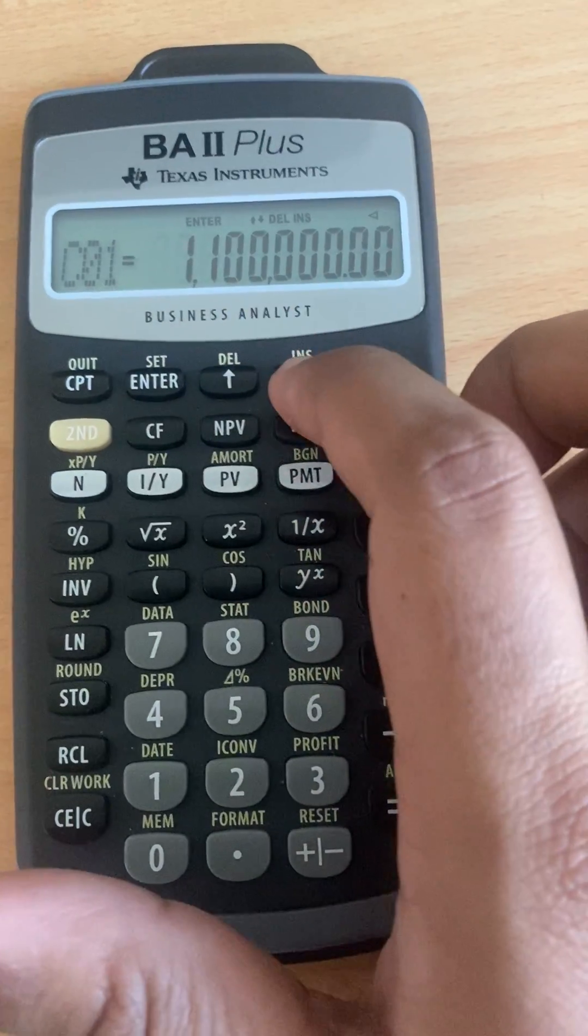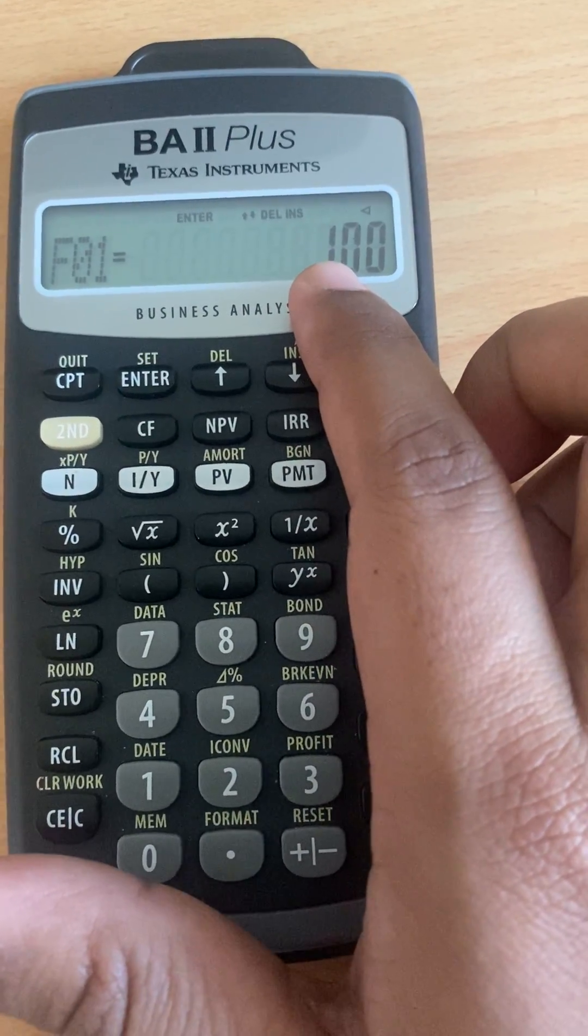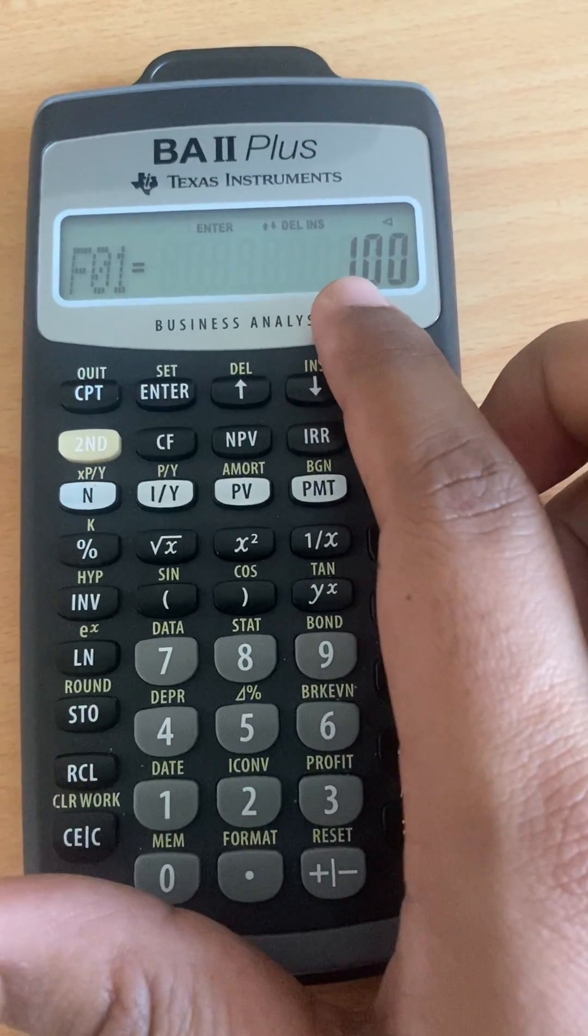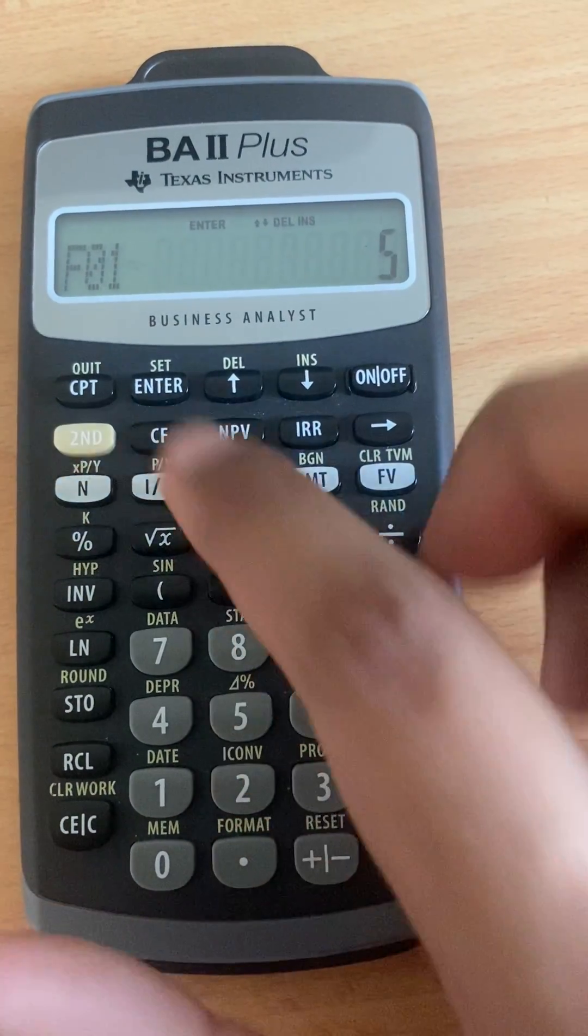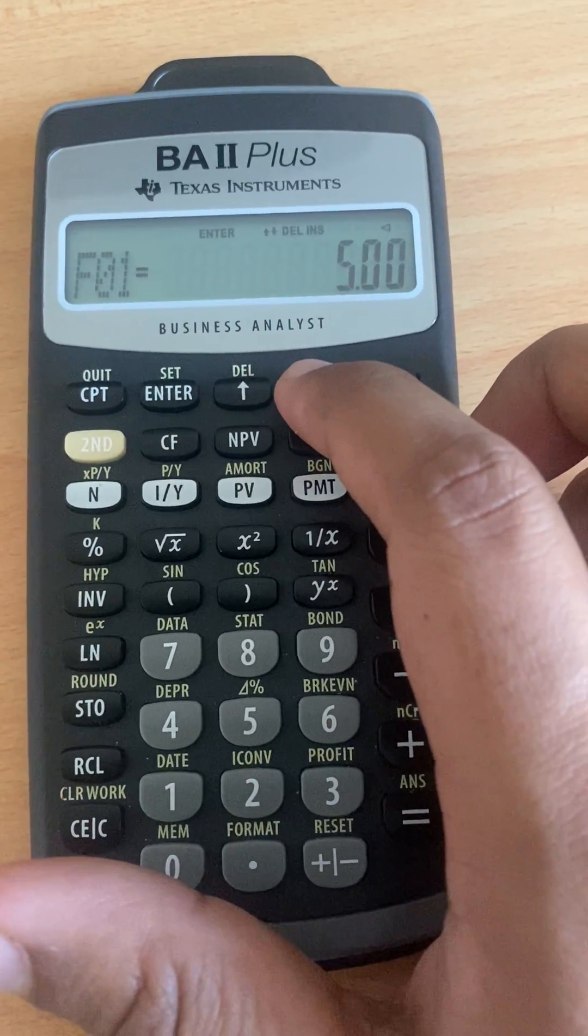And then we put frequency because it's the same from year 1 to year 5. So we put 5 and then we press enter, so it will save your time, alright?